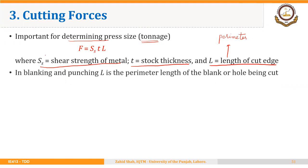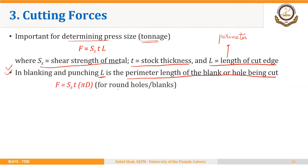In blanking and punching, L is the perimeter length of the blank or hole being cut. For circular or round holes or blanks, the formula is shear strength × thickness × π·d, where π·d is the circumference or the length of the boundary of the circular hole or blank.